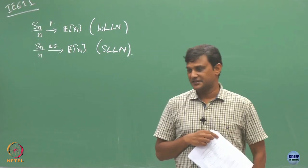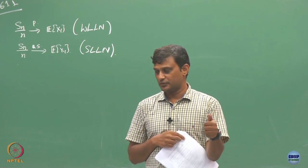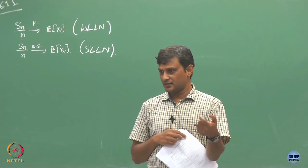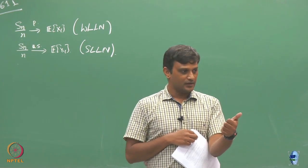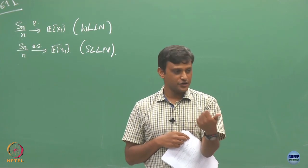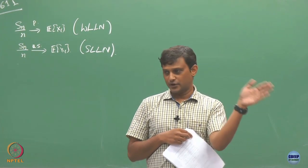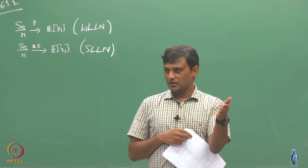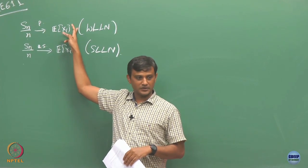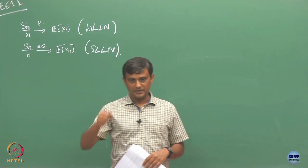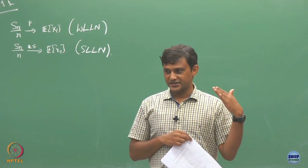Similarly, if you want to decide the success rate of a coin - what is the probability it comes up heads - you just keep throwing it, map head to 1 and tails to 0, count how many times you get 1 and divide by n. This tells you that should go close to the value p as you take more and more samples. Whenever we have parameter estimations to do, we are going to do this.